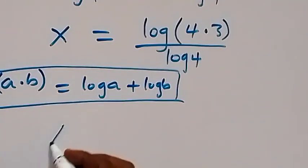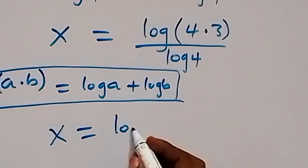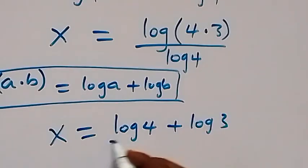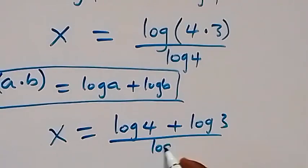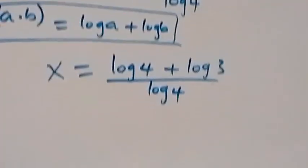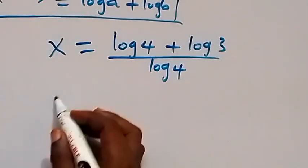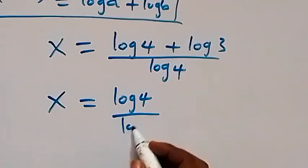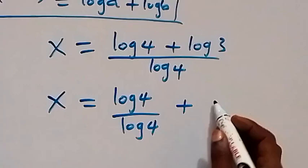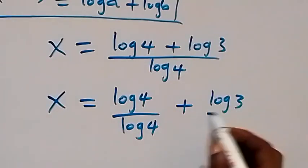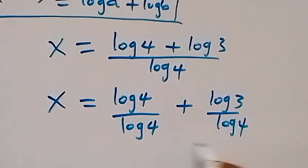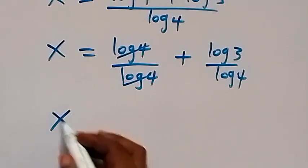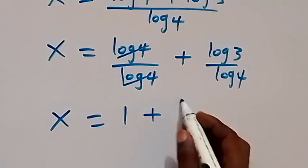Then we have x equals log 4 plus log 3, divided by log 4. We can also separate this fraction, so x equals log 4 over log 4 plus log 3 over log 4. Log 4 over log 4 cancels to give 1, so we have x equals 1 plus log 3 over log 4.